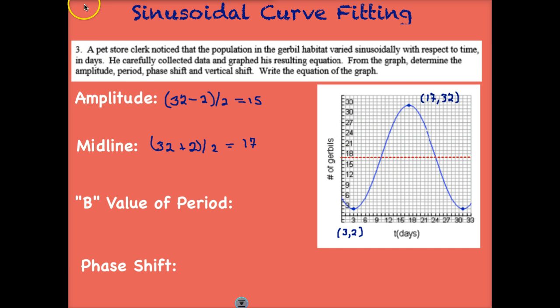Let's now figure out the B value of the period. It looks like we complete one full period in 28 days. We start here at day 3 and it looks like we're finishing here at day 31. So one complete period in 28 days. Well, we would then take 2 pi divided by 28, reduce that, and that gives us our B value.